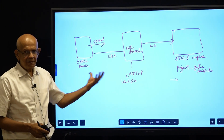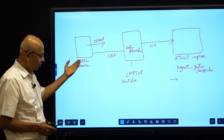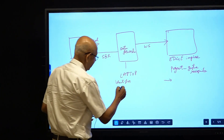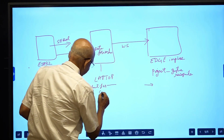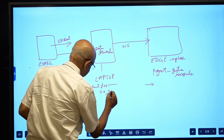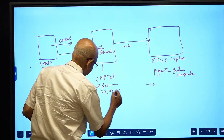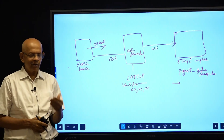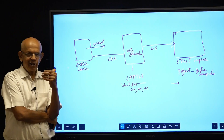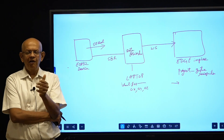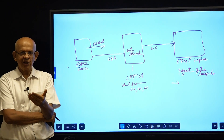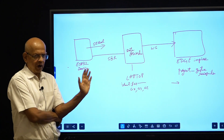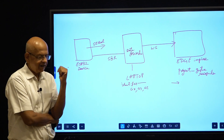Three pieces of data are being transmitted by the program running on the device. The data forwarder identifies them and asks: what should I call these three pieces of data? In this case, the data is Ax, Ay, and Az — acceleration on the x-axis, acceleration on the y-axis, and acceleration on the z-axis. Once named, those names are given to the readings.